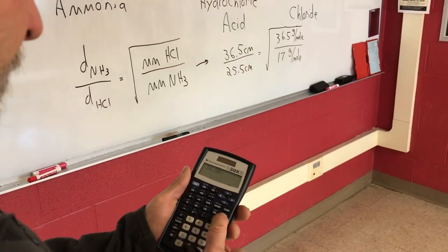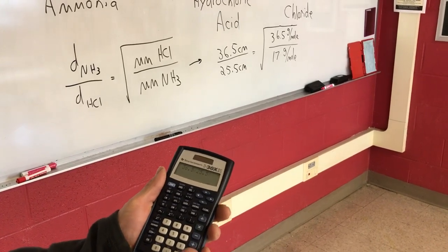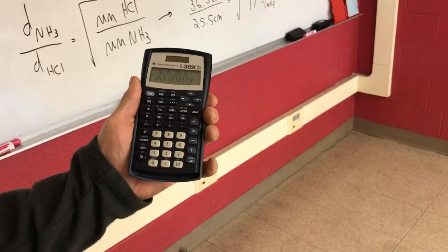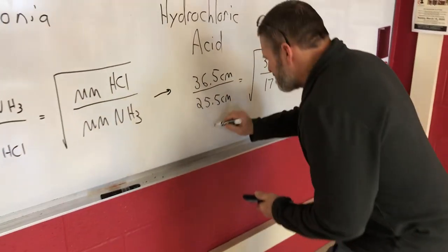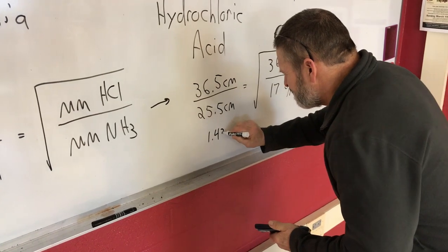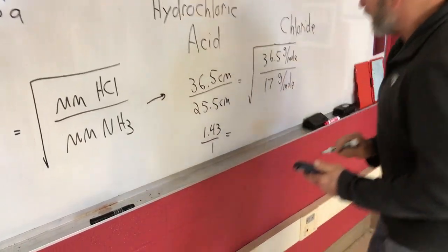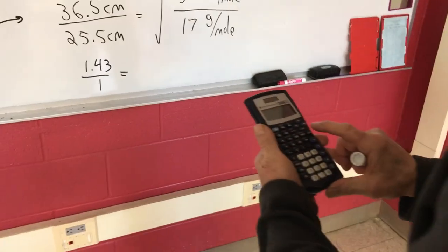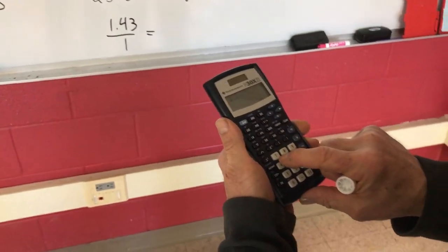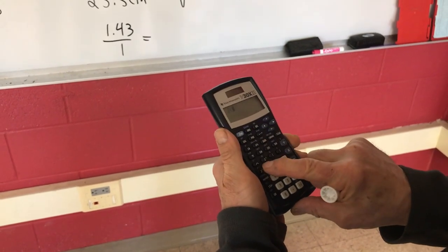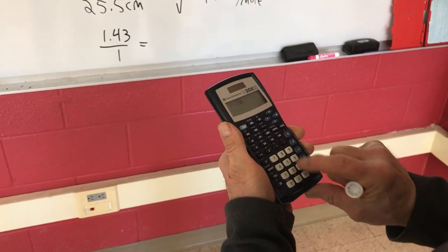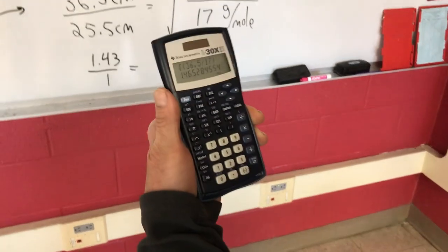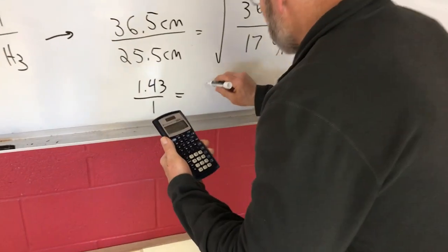So, 36.5 divided by 25.5 is a ratio of about 1.43 to 1. Okay. Let's see how this side works. Let's see if chemistry works. If Graham knew what he was talking about. Okay. So, we're going to take the square root of 36.5 divided by 17. And it comes out to be about 1.47.